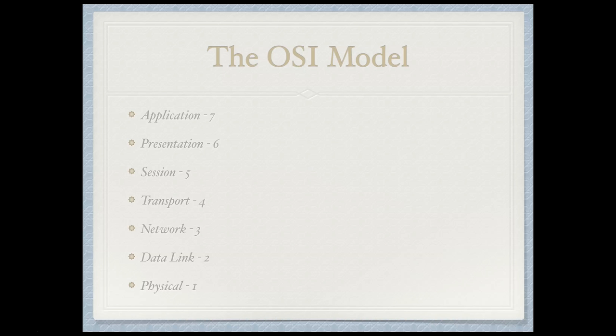You've probably seen these layers already in a course that you've taken or a book that you've read, maybe a podcast that you've listened to. These basically make up what we call the OSI model. They break down networking into a variety of different layers that help us understand how everything pieces together and how data actually flows from an end user all the way across the network back to a server or perhaps another end user.